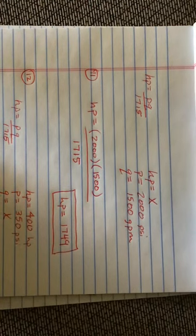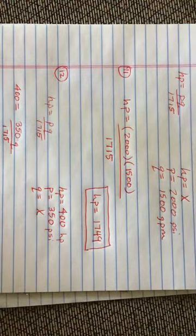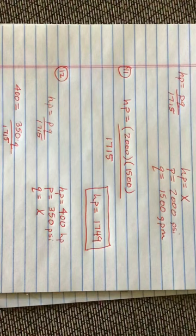Now question 12 is you're given 400 horsepower and 350 PSI. What is the flow rate delivered? In this case you're trying to find Q.